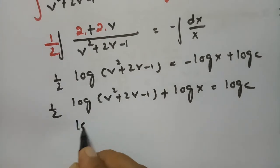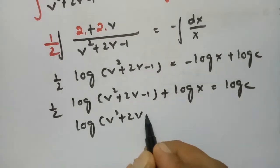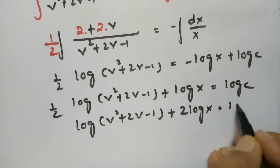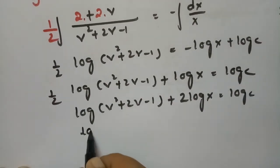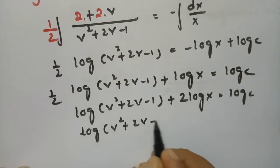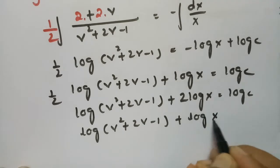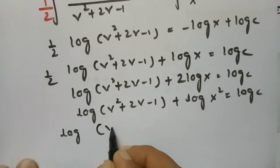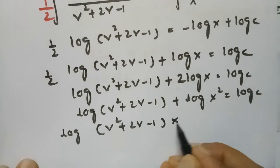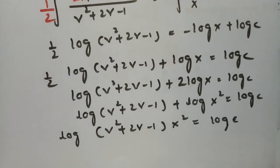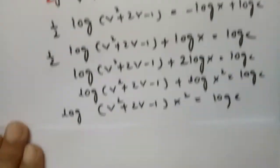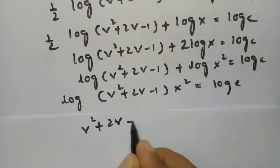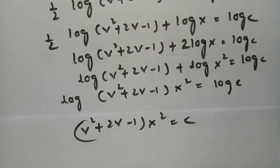Taking 2 as LCM: log(v² + 2v - 1) + 2·log X = log C, which becomes log(v² + 2v - 1) + log(X²) = log C. Using log A + log B = log(AB): log[(v² + 2v - 1)·X²] = log C. Cancelling log on both sides: (v² + 2v - 1)·X² = C.